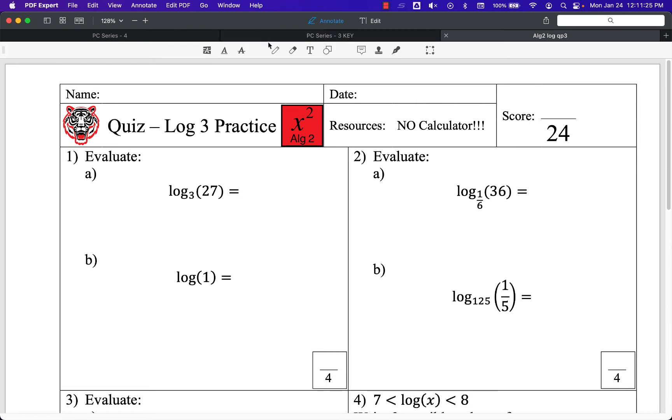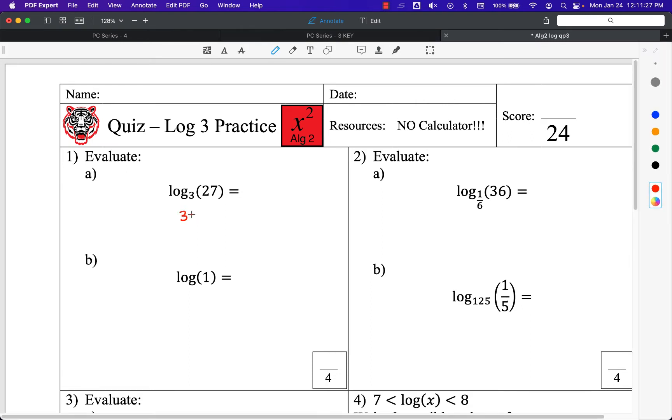Log base 3 of 27. Let's try this. 3 times 3 is 9, and 3 times 9 is 27. So this was 3 to the 1, 2, 3. There are 3 of those 3s. 3^3 is a power of 27. This is asking what power does 3 need to be raised to to get to 27? 3 needs to be raised to this third power.